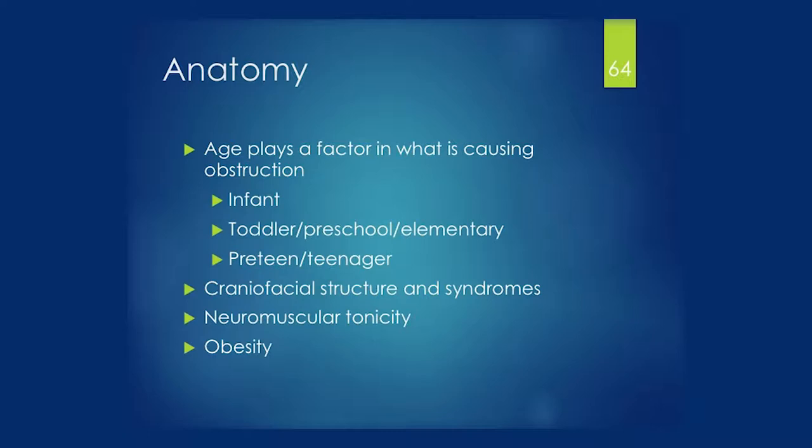Stridor tells you a different location. Inspiratory stridor is usually somewhere in the larynx or supraglottis above the vocal cords. Biphasic stridor is usually at the level of the vocal cords or subglottis, and expiratory wheeze would be in the trachea. The age plays a factor in what's causing the obstruction — whether you're an infant, toddler, or preteen. Craniofacial structure, syndromes, neuromuscular issues and tonicity problems, and obesity are all contributors.